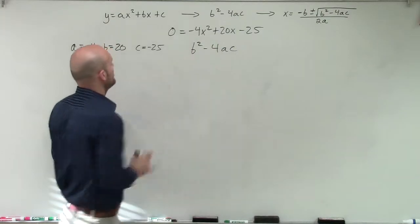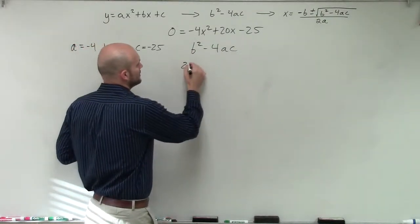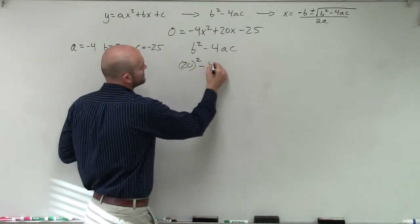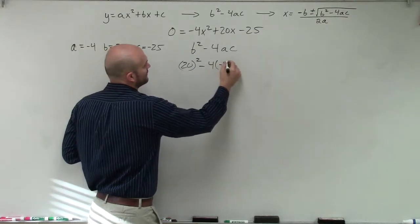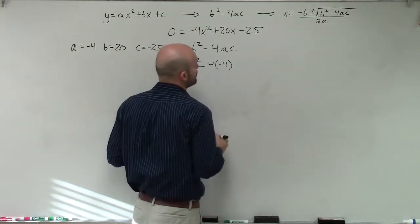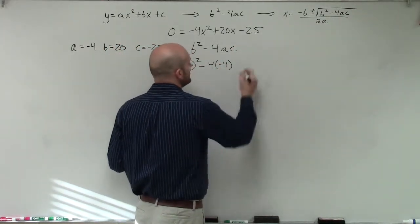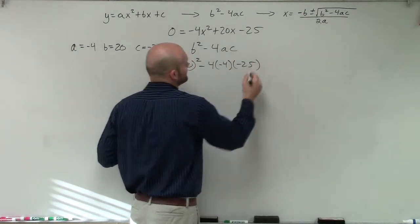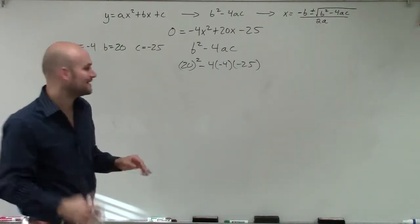So now I'm just going to plug in my values. So I say b is 20, so 20 squared minus 4 times a, which is negative 4, times c which is negative 25.